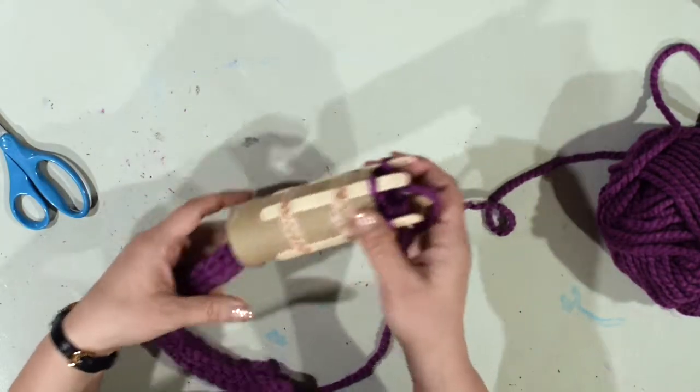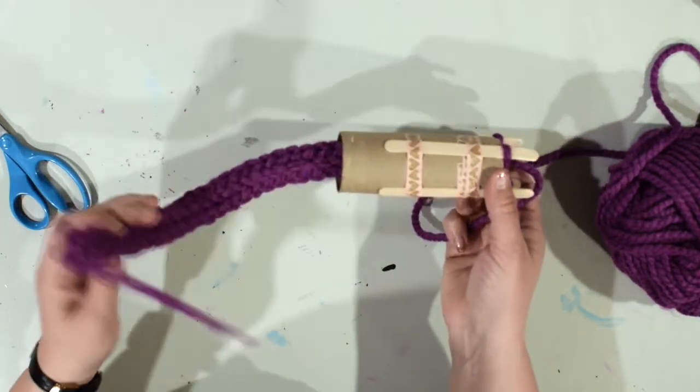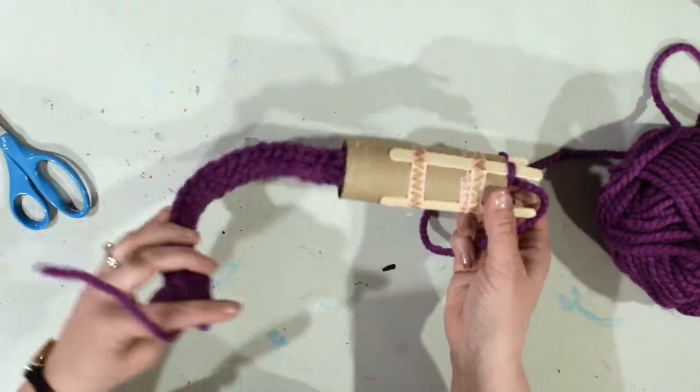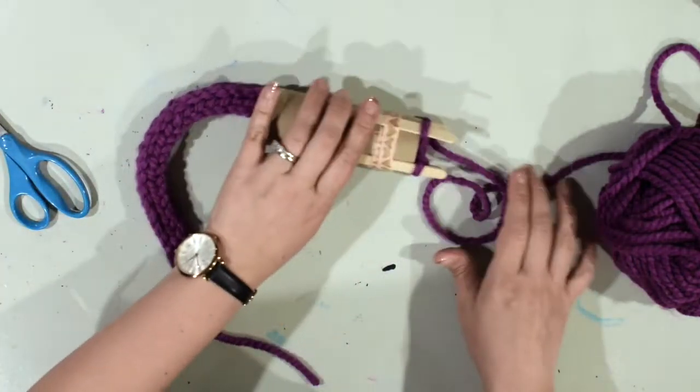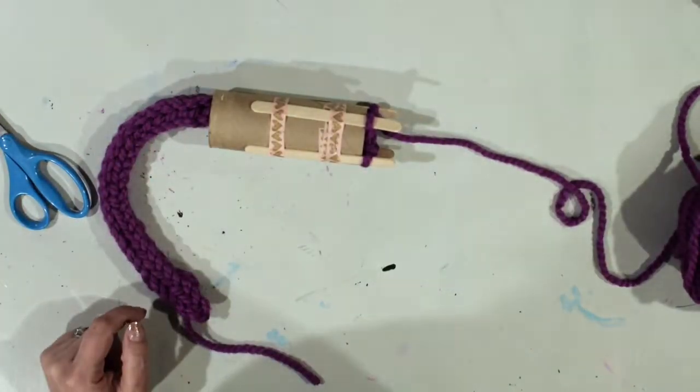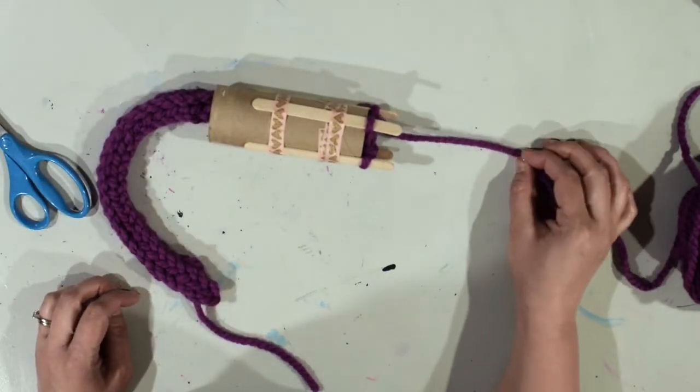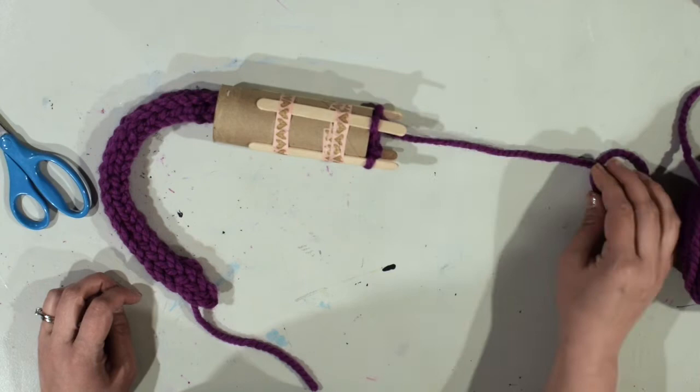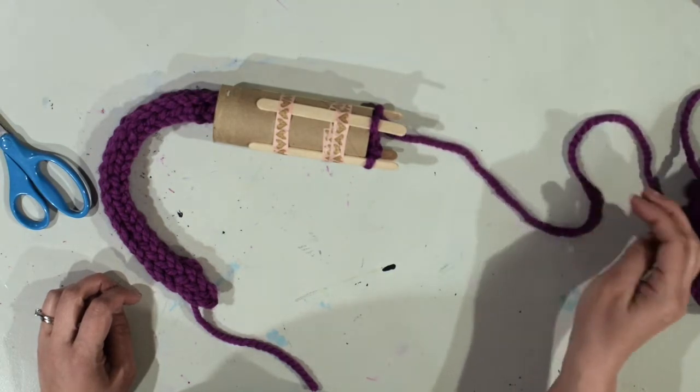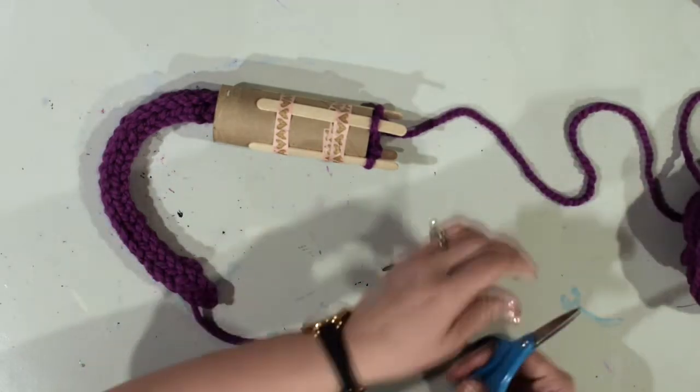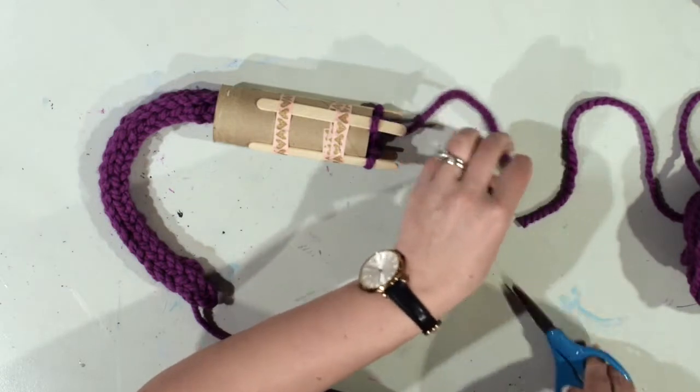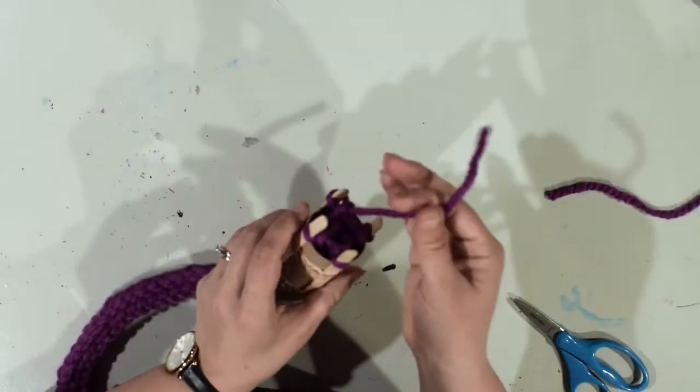Now when I'm happy with however long that I have my knitting - and you can keep going however long you want your knitting to be - but when I'm ready to take it off my spool, what I'm going to do is I'm going to cut my yarn about right here. So you don't want to cut it super duper close - that's going to cause you some problems.